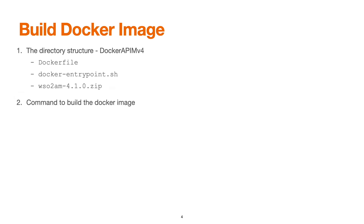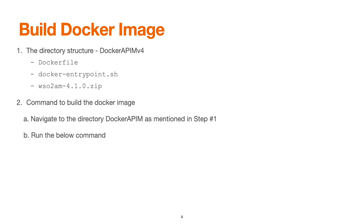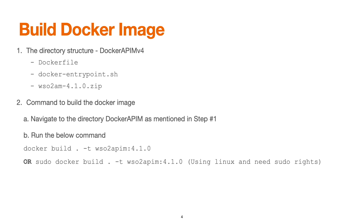Here are the commands to build a Docker image. Step 1 is to navigate to the directory docker-apim-v4. Next, run the command: docker build . -t wso2apim:4.1.0. Here, 'docker build' builds the image, '.' indicates the current directory, '-t' indicates the tag, 'wso2apim' is the logical name, and '4.1.0' is the version number. For Unix-based systems or Podman, prefix with sudo: sudo podman build . -t wso2apim:4.1.0. Once applied, the image will be built and saved to your local repository.